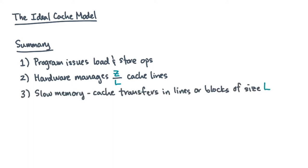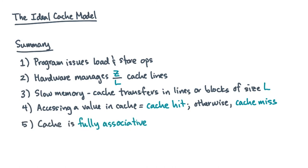As in the conventional IO model, slow memory to cache transfers will happen in lines or blocks of size L. If the value for some slow memory address is already in cache, it's a cache hit. And otherwise, it's a cache miss.